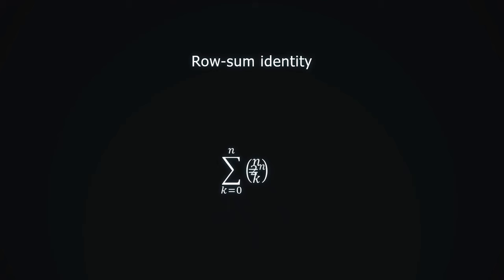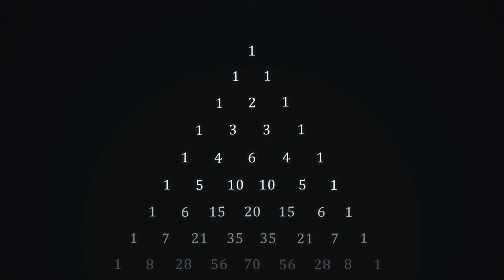These two ways count the same quantity, so 2 to the power of n is equal to the sum of binomial coefficients in the nth row.